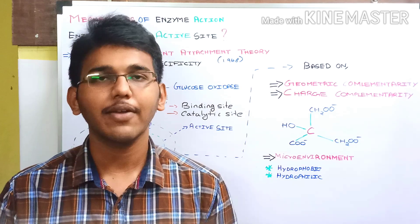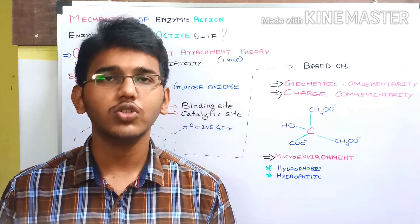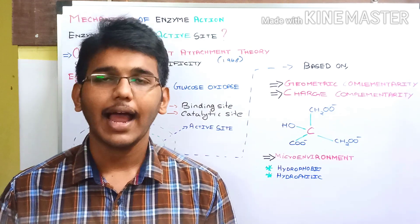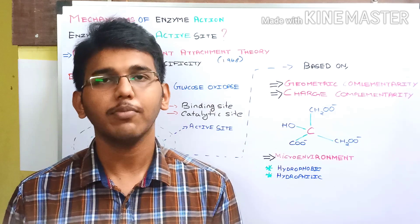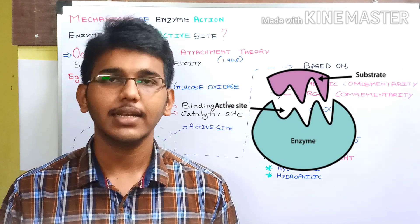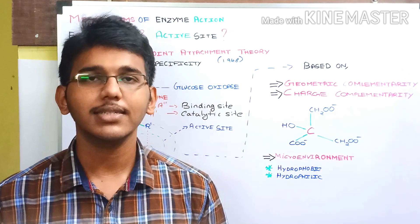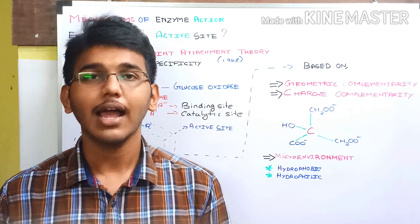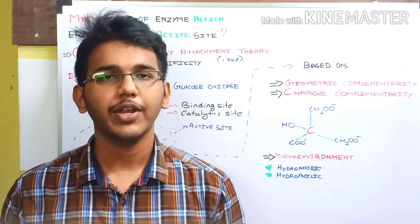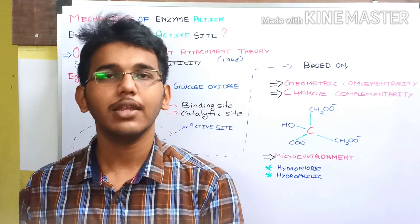This is how an enzyme works and catalyzes the conversion of substrate to product. Next, we have to discuss two important terms: the active site and enzyme action. Active site is nothing but a cleft or a pocket — comparatively small compared to the size of the enzyme — to which only the substrate will bind. The active site has two regions: one is the binding site and the other is the catalytic site. In this part of the video on mechanisms of enzyme action, we are going to discuss about Ogston's three-point attachment theory of enzyme action.